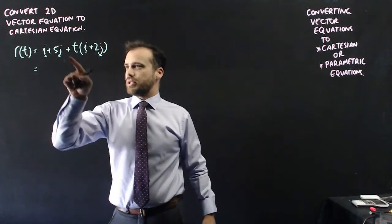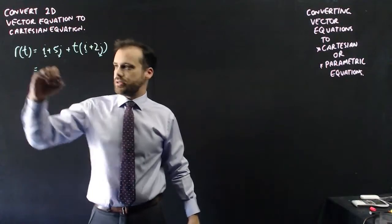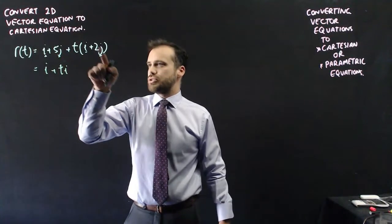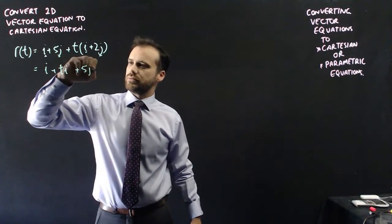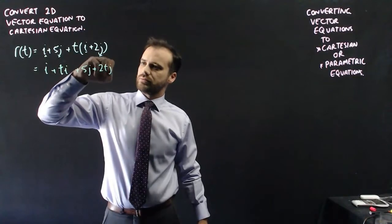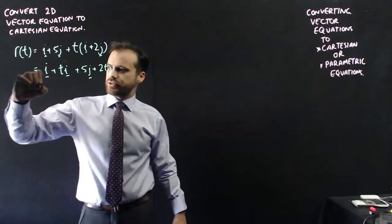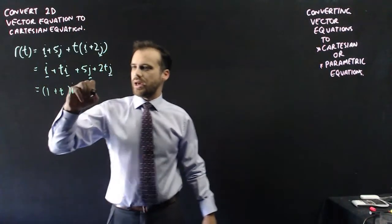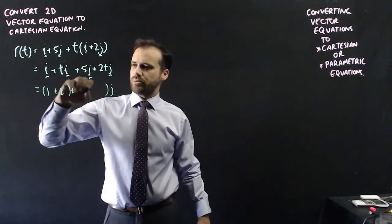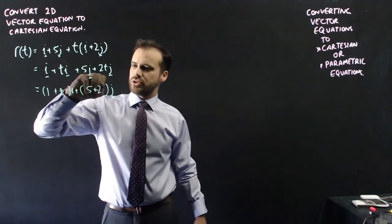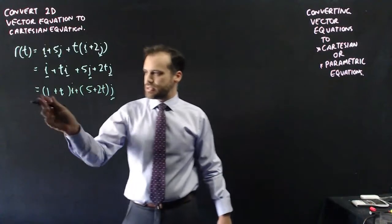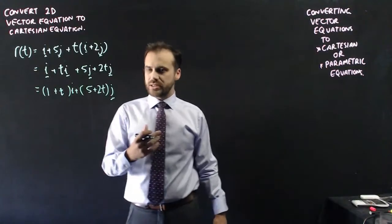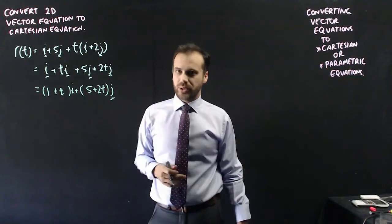So I have i plus ti here, and I have 5j plus 2tj here. Now I can factorize these so I can say that i bracket 1 plus t and j bracket 5 plus 2t. Now this tells me my x coordinate and this tells me my y coordinate, so I can now say that x is equal to 1 plus t and y is equal to 5 plus 2t.